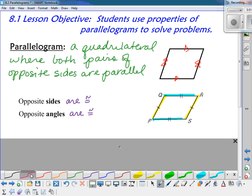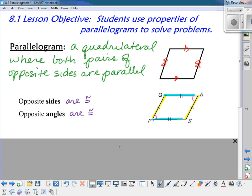And both pairs of opposite angles are also congruent. So angle P is congruent to angle R and angle Q is congruent to angle S. So we can use these properties to solve problems.